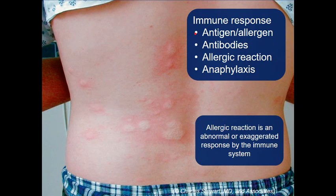Anaphylaxis is a full-body allergic reaction. Some of you may have food allergies, or maybe you've touched poison ivy, or had a weird soap reaction — those are usually local allergic responses. That happens because your immune system releases a chemical mediator called histamine, which causes local vasodilation to bring more immune cells to the site of the allergen. Histamine also causes swelling, redness, and localized itchiness.